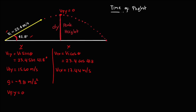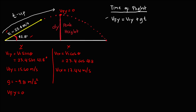To find the total flight time, the formula is: vfy equals viy plus gravity times time. Take note that using this formula we are only solving for the time up, because we're using the final velocity equal to zero. So: 0 equals 15.60 meters per second plus negative 9.8 meters per second squared times time.